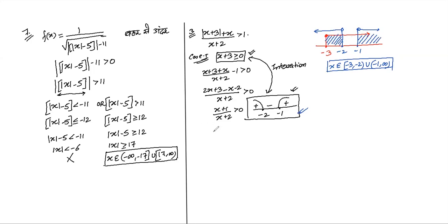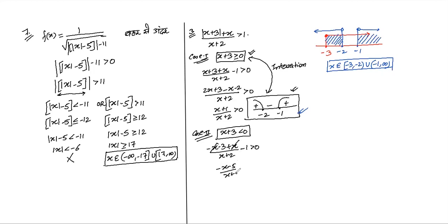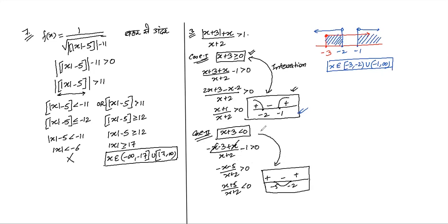Case 2: x+3 < 0 (negative inside modulus), so modulus opens with negative sign: (-x-3)/(x+2) > 1, giving (-x-3+x-x-2... after LCM: (-5)/(x+2) > 0. Multiplying both sides by -1 reverses the inequality: 5/(x+2) < 0, so -5/(x+2) > 0. The wavy curve gives the region (-5, -2). This holds under the condition x < -3, so we take intersection.